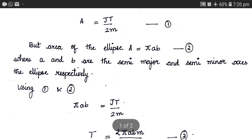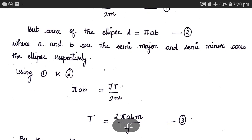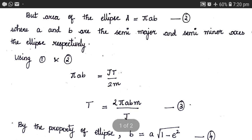Equation 1 and equation 2 both represent the same area. Equating them, we get pi times a times b equals JT divided by 2m. We are interested in finding capital T, so rearranging we get T equals 2 pi times a times b times m, divided by J.